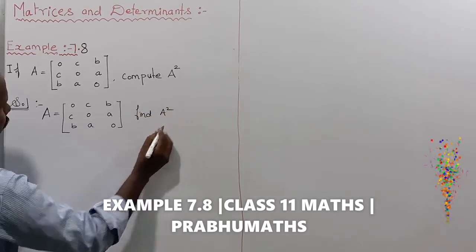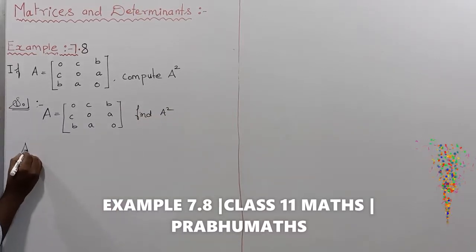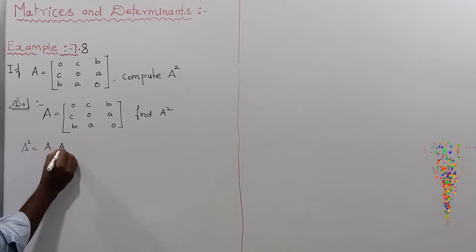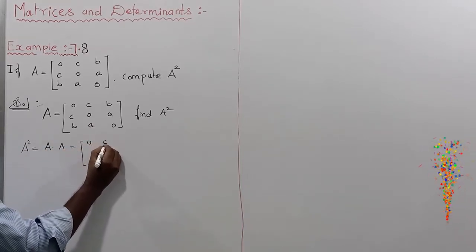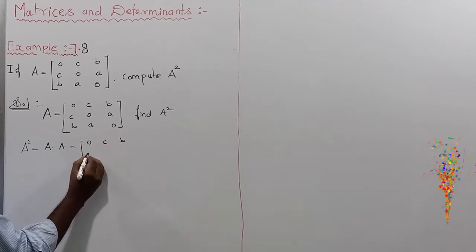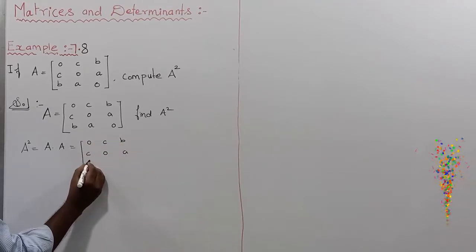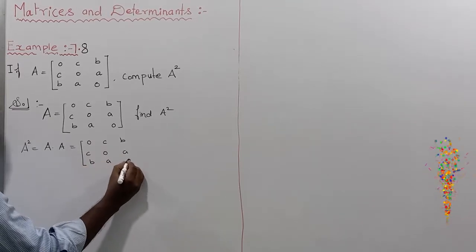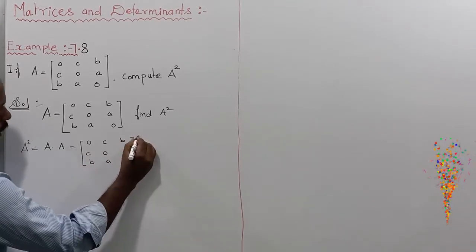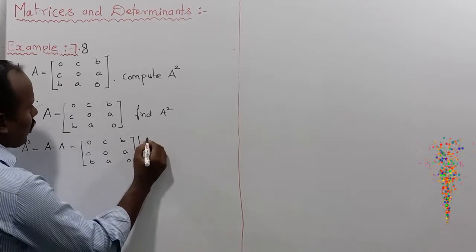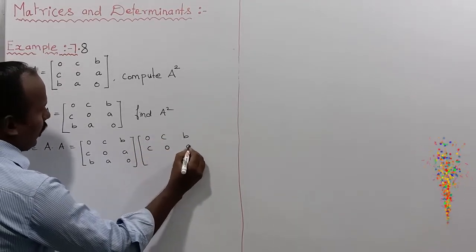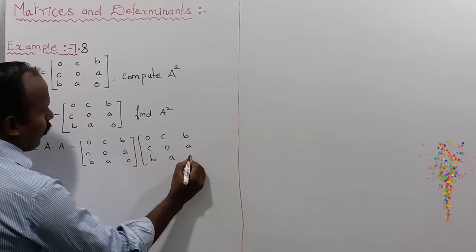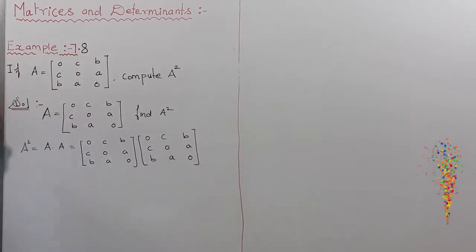A squared is equal to A into A, which equals the matrix [0, c, b; c, 0, a; b, a, 0] multiplied by the same matrix [0, c, b; c, 0, a; b, a, 0].